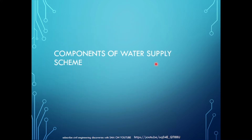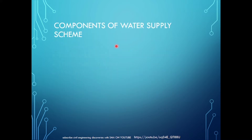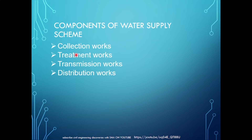The components of a water supply scheme are: collection works, treatment works, transmission works, and distribution works. We will discuss these from the collection point to the treatment point and disposal point.